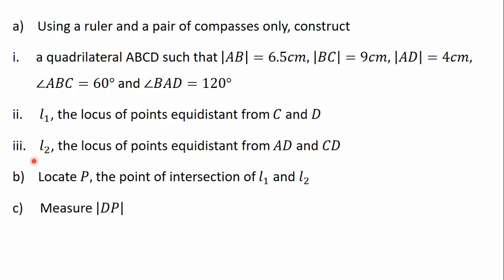Part ii: construct L2, the locus of points equidistant from the line AD and the line CD. Part b: locate P, the point of intersection of L1 and L2. And part c: measure the length of DP.